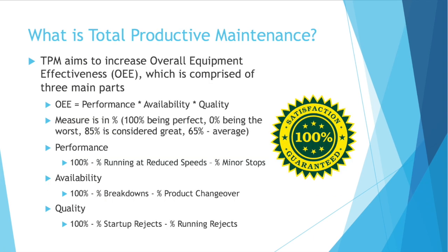TPM aims to increase overall equipment effectiveness, OEE, which is comprised of three main parts. OEE is equal to performance times availability times quality, and it's measured in percentage points. So 100% is perfect and 0% is the worst — that would be your machines never running.